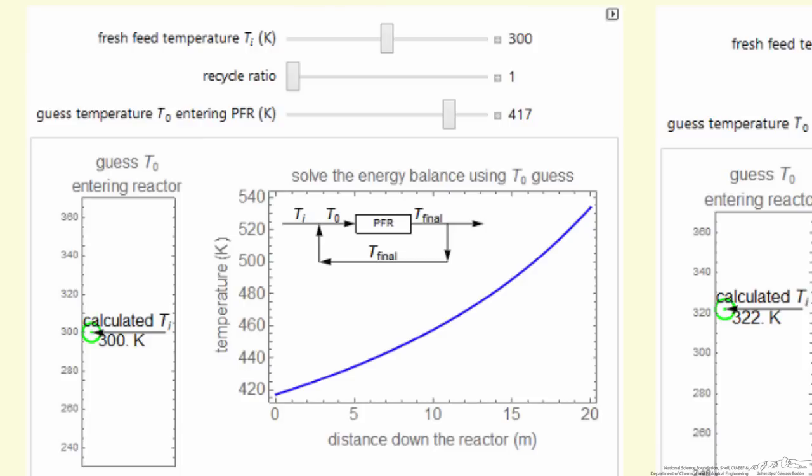To solve the differential equations for the plug flow reactor, the mass balances and the energy balances, we actually need the value of T0, but T0 depends on what T final is. That depends on how much conversion takes place in the plug flow reactor.